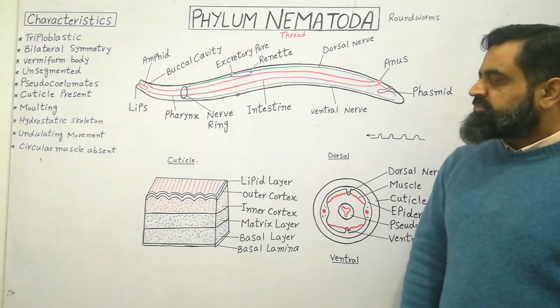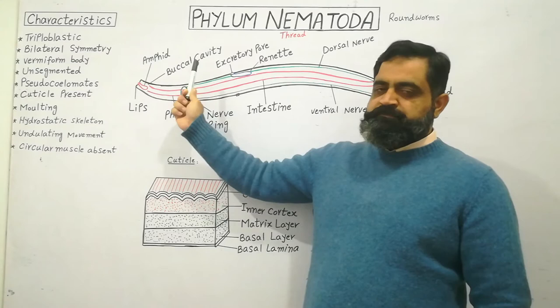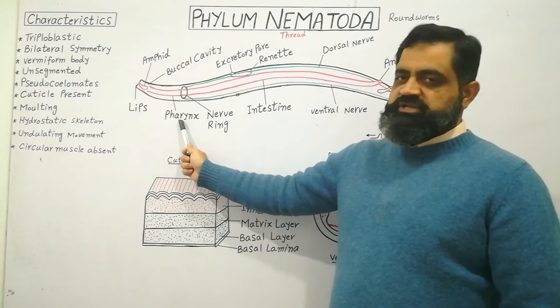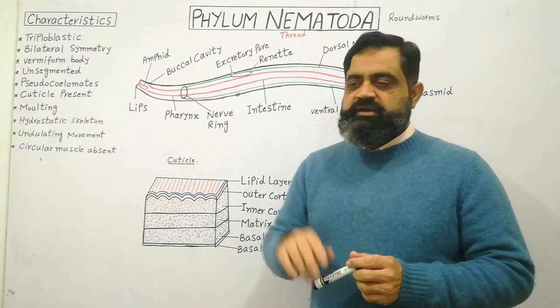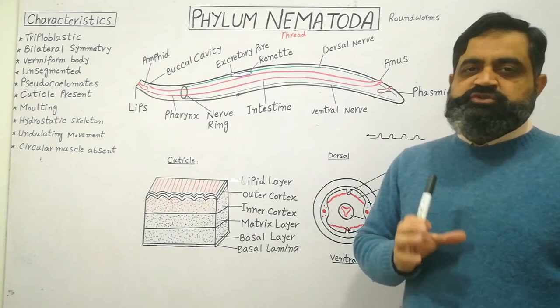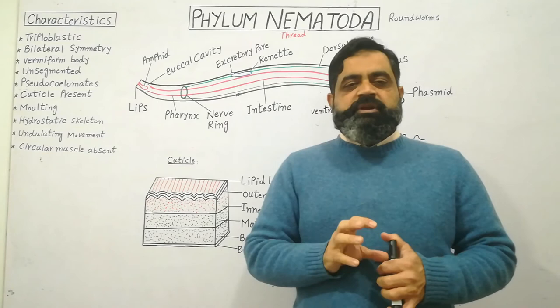Looking at the digestive system, just posterior to the mouth is a region known as the buccal cavity. The mouth leads into the buccal cavity, which leads into a tubular structure known as the pharynx. This portion is the foregut. These animals do not have a midgut; right after the foregut begins the hindgut. The pharynx leads into the intestine where digestion and absorption take place, and waste is expelled through the anus or cloacal aperture.